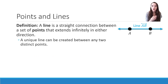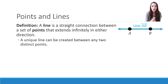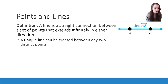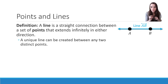To begin, we have points and lines. A line is a straight connection between a set of points that extends infinitely in either direction. A unique line can be created between any two distinct points. Here we have points A and B, and we call the line that stretches between them line AB. We have special notation for lines where we write the two letters representing the points with a line over top of them with arrows extending in either direction, showing the line goes on infinitely either way.